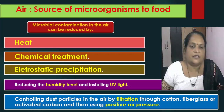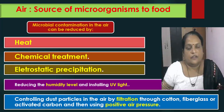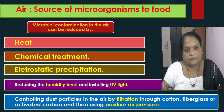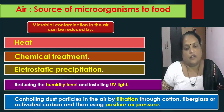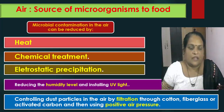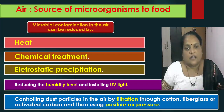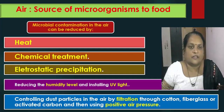Microbial contamination in the air can be reduced by different ways. We can use heat or chemical treatment or electrostatic precipitation to reduce the microbial number in the air. Reducing humidity level or using UV light can also control microbial numbers. Controlling dust particles by filtration through cotton, fiberglass or activated carbon, and using positive air pressure, can also reduce the number of microorganisms in the air.